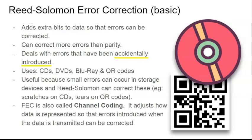It deals with errors that have been accidentally introduced when data is transmitted. In physical media, this could be a scratch on a CD, DVD, or Blu-ray disc, or a tear or dirt on our QR code. In both these cases, Reed Solomon should correct the error so that our disc plays and our QR code still scans.